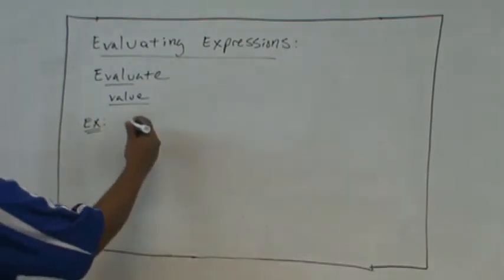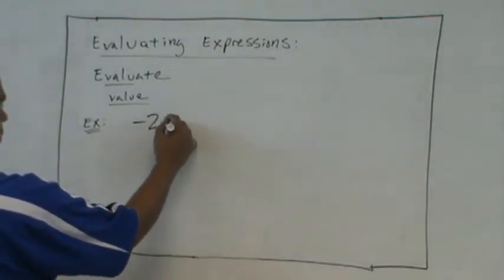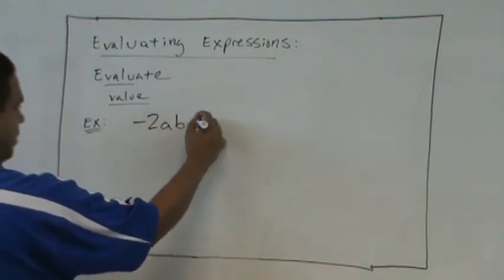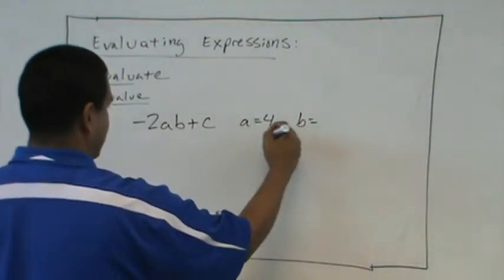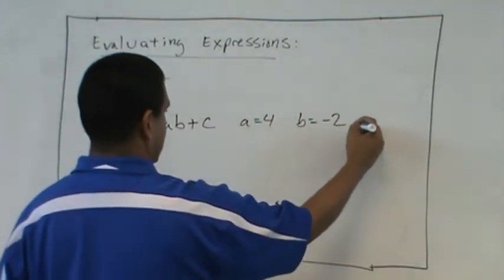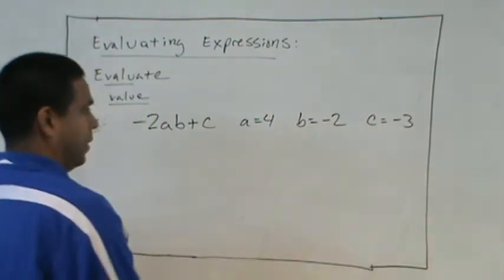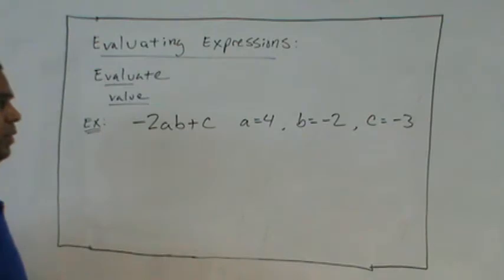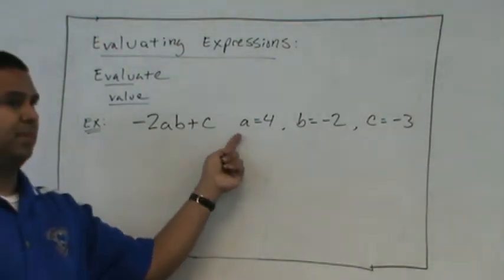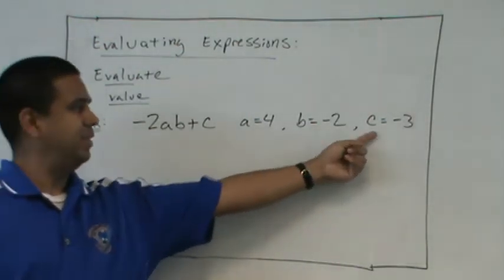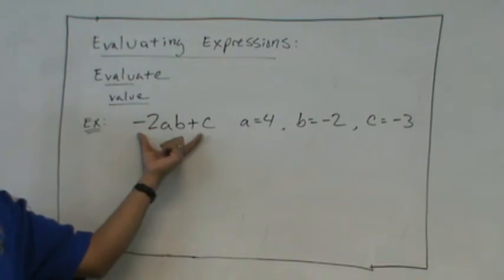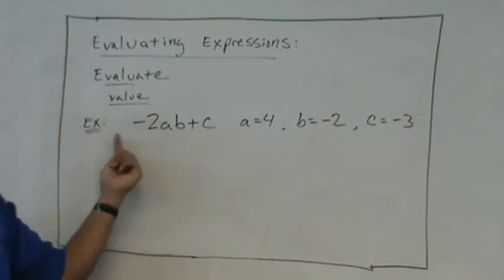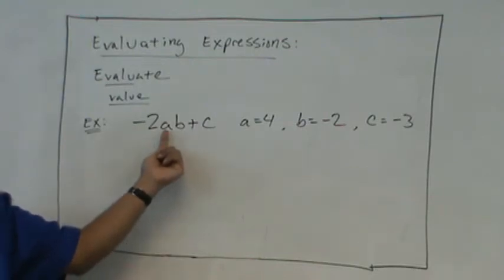For example, we'll start with an easy one. What if I have negative 2ab plus c? And I tell you that a is 4, b is negative 2, and c is negative 3. So there's our three values. So a is 4, b is negative 2, c is negative 3. This is our expression. So this is our algebraic expression. So this is negative 2 times a times b plus c.